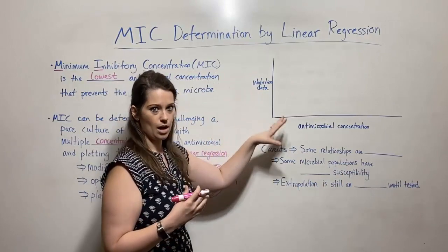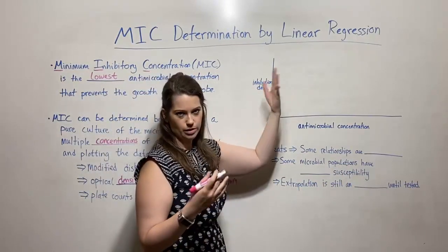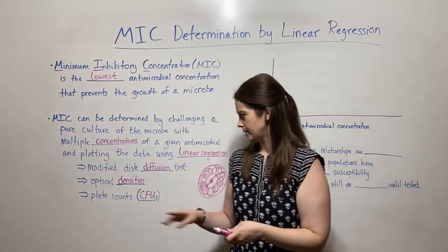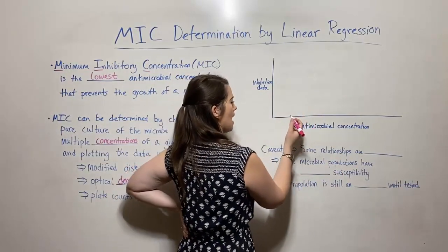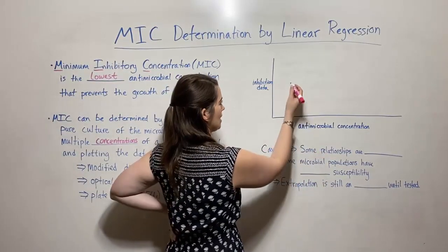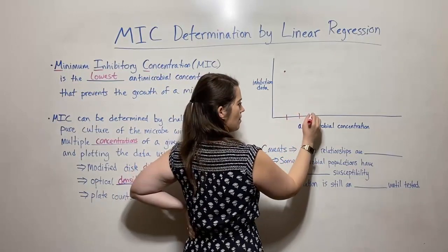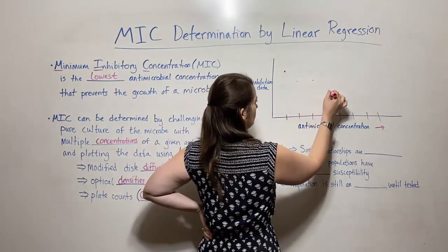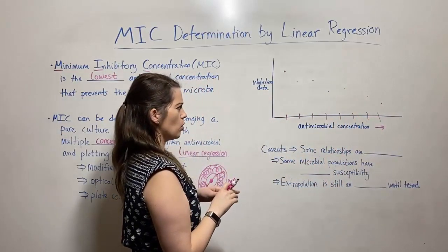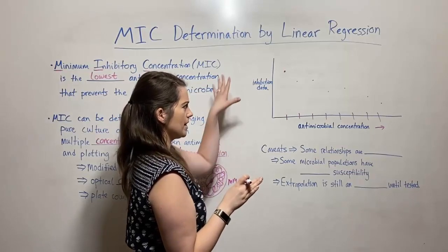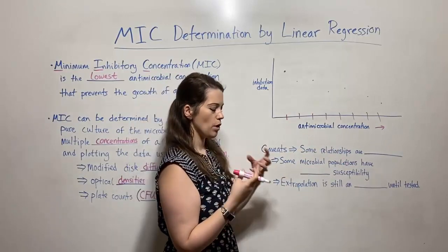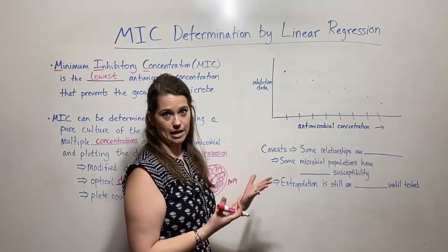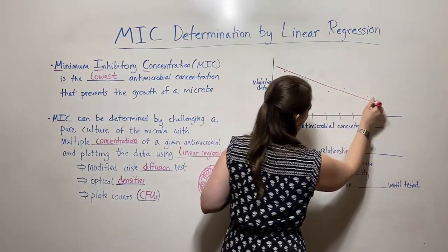Once you've got that data, you have to plot it to do some kind of linear regression. You put the antimicrobial concentration on the x-axis and your inhibition data on the y-axis, whether that's CFUs, optical densities, or zone diameters. At the lowest antimicrobial concentration tested, you had quite a bit of growth still, and then as you test larger concentrations, the growth decreases. You can see it's a roughly linear relationship, so you can have your spreadsheet program — Excel, Google Sheets, or even by hand — put in a line of best fit, a linear trend line.